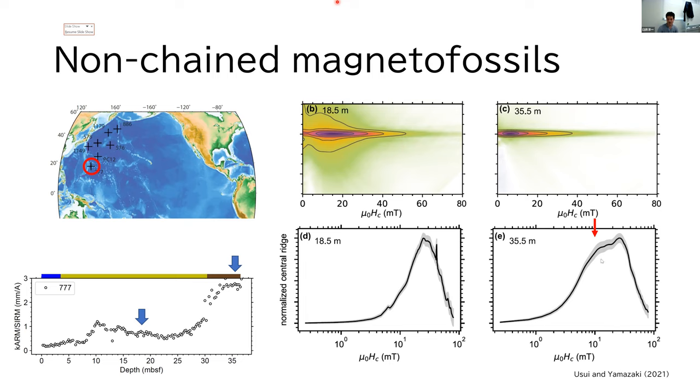However, this low coercivity, 10 millitesla, is almost equal to the theoretical value for isotropic grains, single domain magnetite crystal.